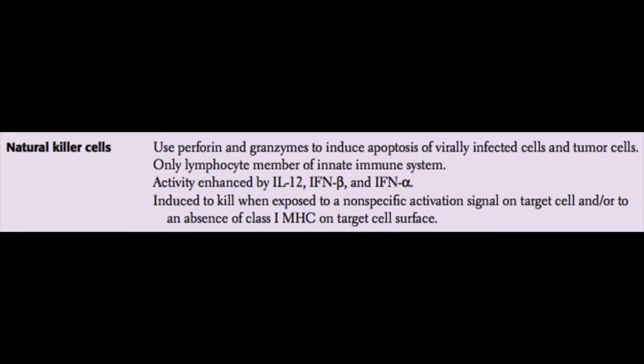Another lymphocyte of the immune response is the natural killer cell. Remember, this is lymphoid lineage — it does not come through the monocyte-myelocyte lineage. It comes through the same lineage as B and T cells, but it's not part of the adaptive immune response; it's part of the innate immune response. It uses perforin and granzymes to induce apoptosis of virally infected cells as well as tumor cells, and it's the only lymphocyte member of the innate immune system. Natural killer cells can be induced to kill when exposed to a nonspecific activation signal on the target cell, or to an absence of class 1 MHC on the target cell surface.